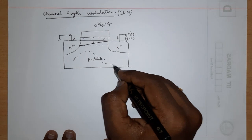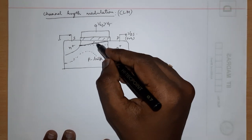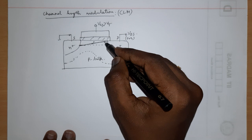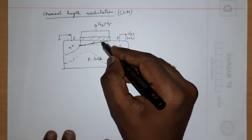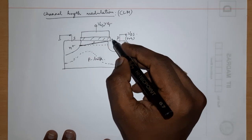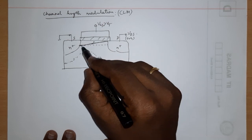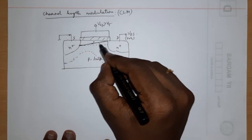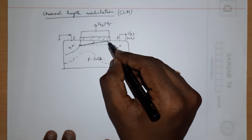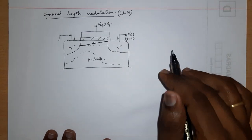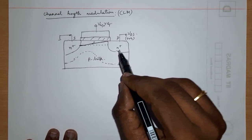The depletion region extends and the inversion layer shrinks. The carrier velocity increases here because fewer carriers are present to maintain the constant current. The channel is basically pinched off — it has cut off at this edge and the current remains constant. So what happens if you increase VDS further?